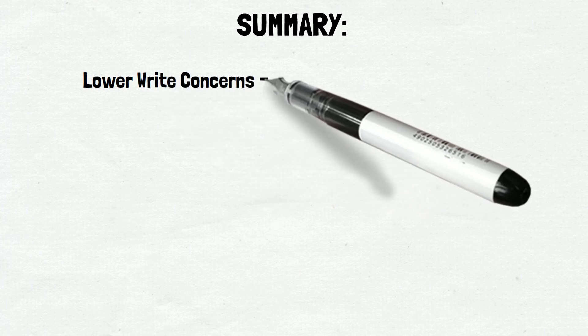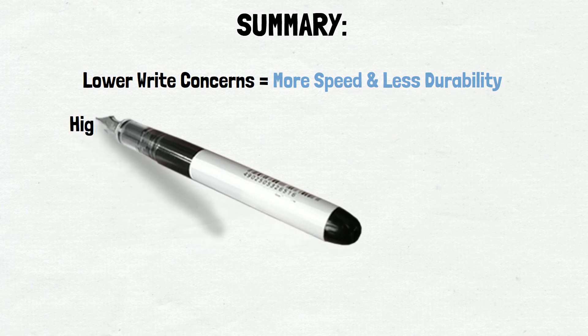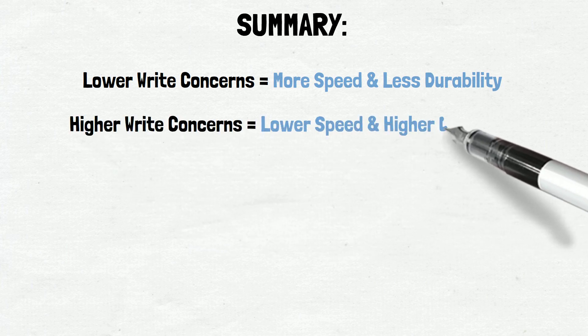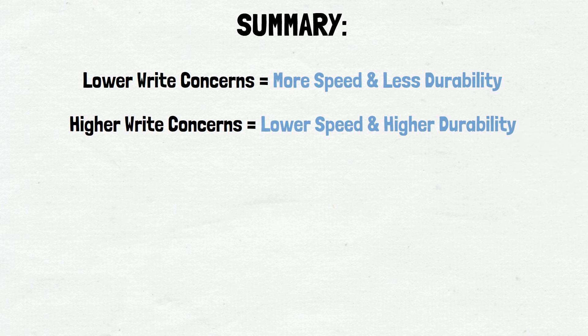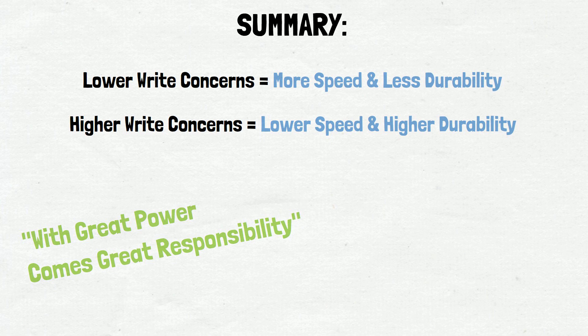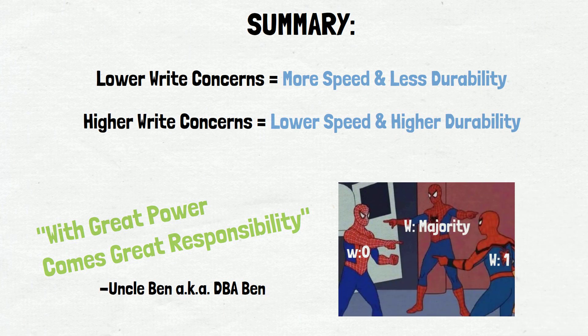To summarize, lower write concerns generally mean faster operational throughput, but with lower data durability. And higher write concerns generally mean slightly slower operational throughput, but with higher data durability. In the latest version of MongoDB, the default setting is majority, providing higher data durability as a priority. However, end users are still able to change these settings if desired. Which write concern is best for you is highly dependent on your workload and what you are optimizing for. That's all. Thanks for watching.